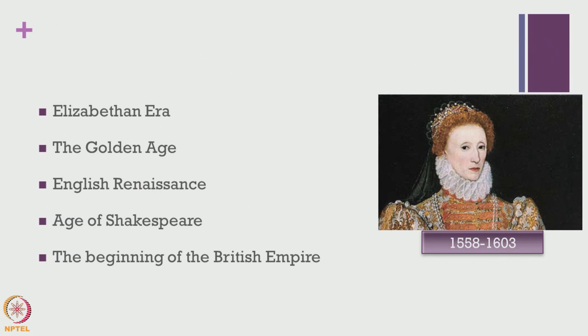Hello everyone, welcome to today's session on the course, the history of English language and literature. In today's session we continue to take a look at Elizabethan England and also try to position the Elizabethan times in the historical sense. As a quick recap, this was the time period in which Queen Elizabeth I was reigning from 1558 to 1603. We also saw how the Tudor dynasty came into being and how Elizabeth I came into power through the various marriages of Henry VIII and through the process of reformation. We also noticed that there are various ways in which this age was getting referred to.